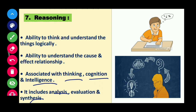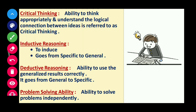To summarize what we discussed: Thurstone originally gave these seven primary mental abilities, but later he added two more abilities — deductive reasoning and problem solving ability. In deductive reasoning, we generalize results from specific observations.